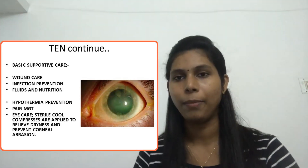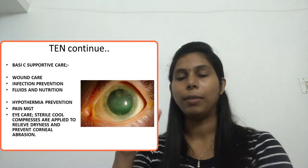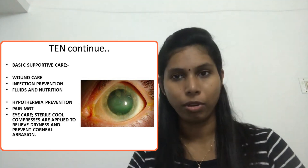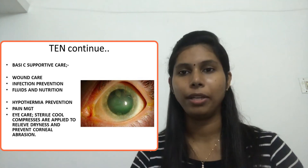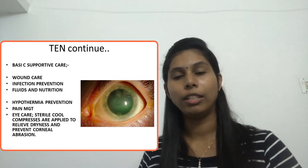So what we need to do in this condition: we need supportive care, wound care, and sterile dressing. Infection prevention is very important. We need to get the patient into reverse isolation because the patient is immunocompromised and has a high chance of getting infection.